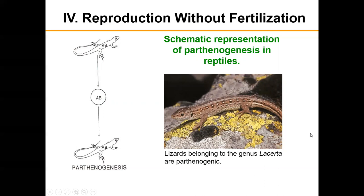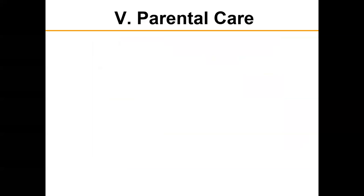We do have examples in whiptail lizards. We have one whiptail species in Indiana — the six-lined racerunner — and it is a sexual species. Members of that family are the flagship family known to undergo parthenogenesis, but none of the lizards or snakes in Indiana undergo parthenogenesis; they are all sexually reproducing species.